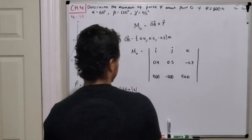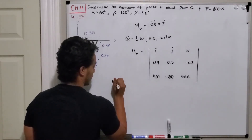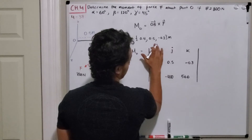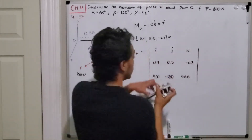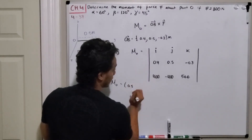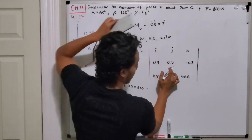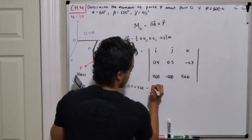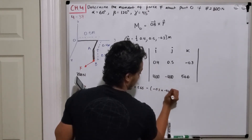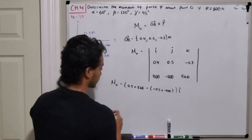To evaluate the cross product, for the i component we ignore the i column and i row, then multiply: 0.5 times 566, which gives 283, minus negative 0.3 times negative 400, which gives 120. So the i component is 283 minus 120, giving us the moment contribution in the i direction.